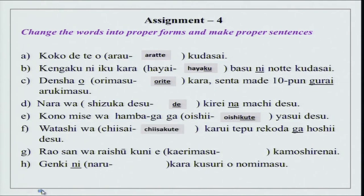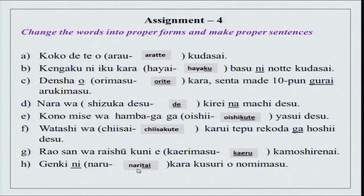Watashi wa chisakute karui tape recorder ga hoshii desu — hoshii always takes ga; karui is light. Rao san wa raishu kuni e kaerimasu — it should be in plain form: kaeru kamoshirenai. Then: genki ni naritai kara kusuri wo nomimasu — ni naritai means want to become. Sensei ni narimasu, ii hito ni narimasu. Please remember narimasu takes particle ni.